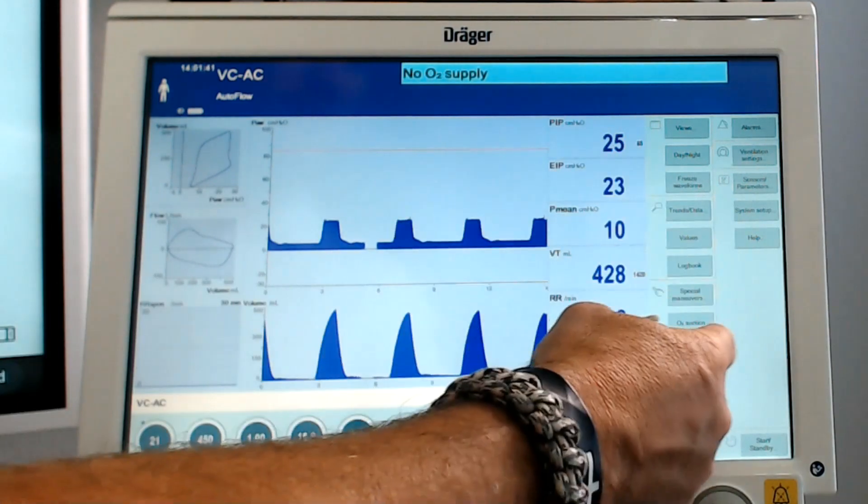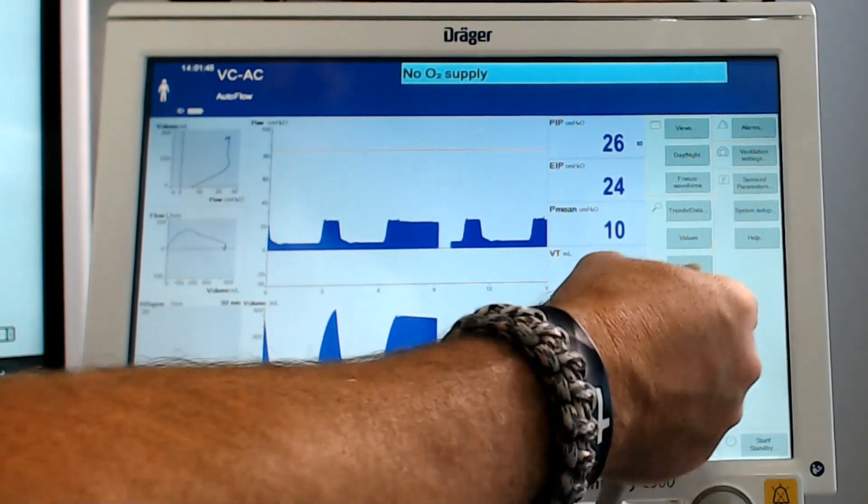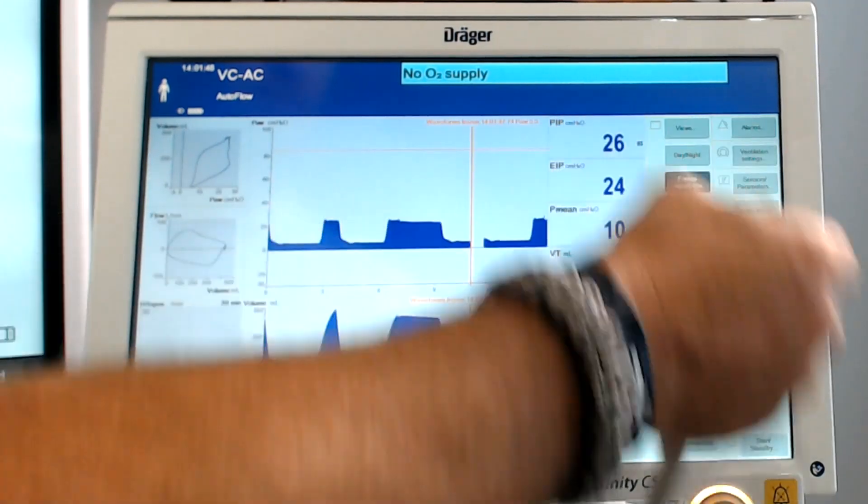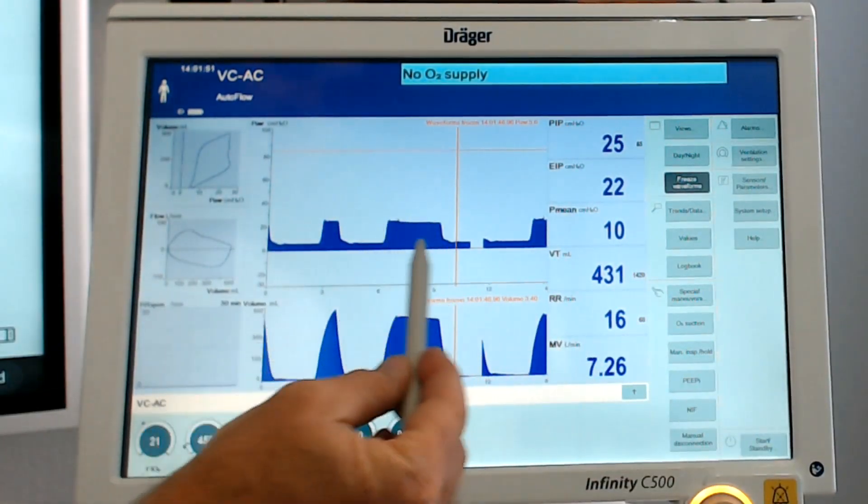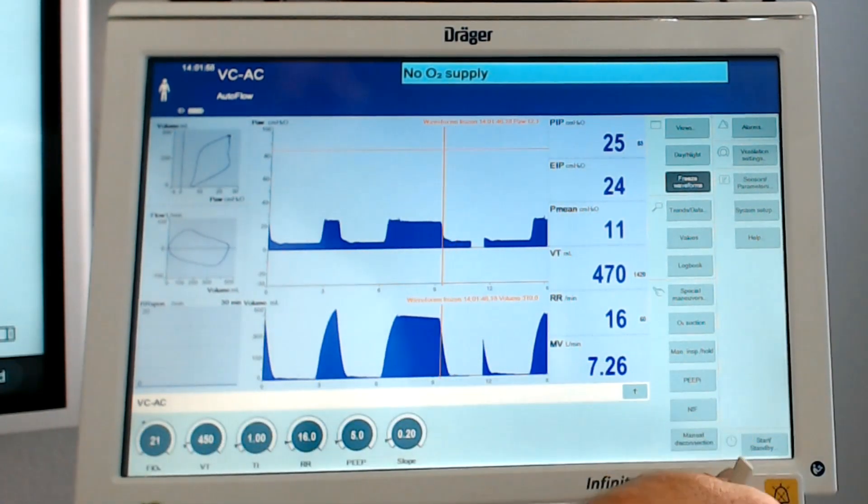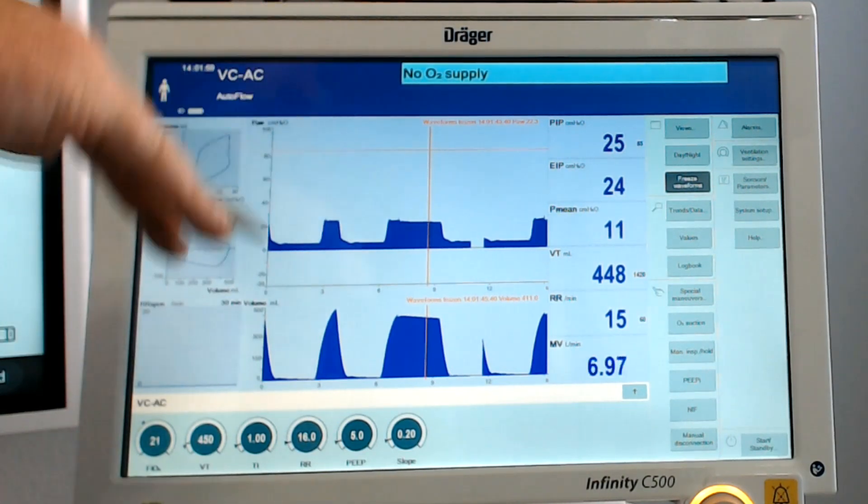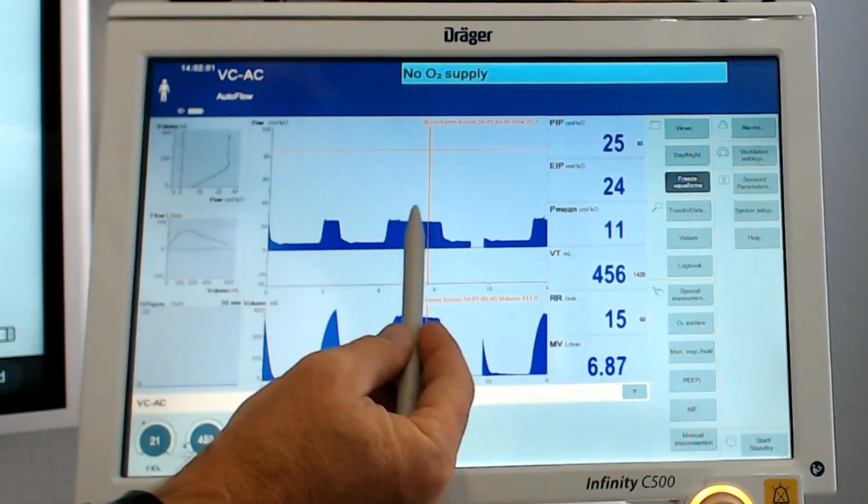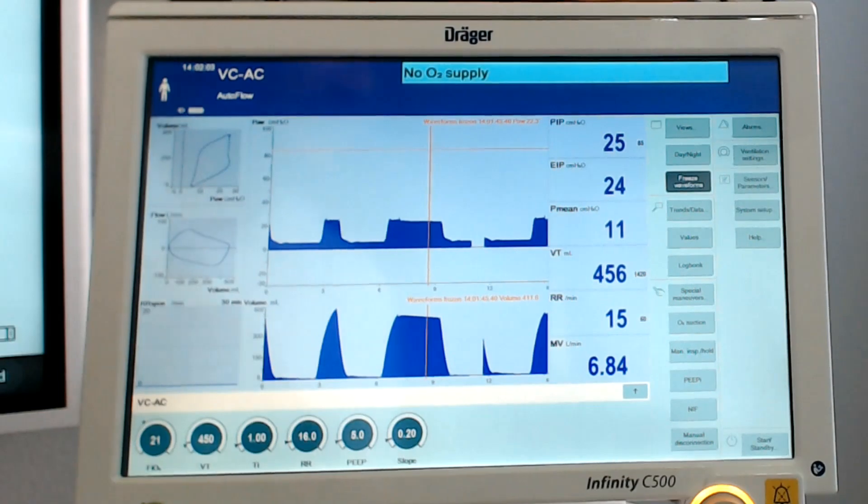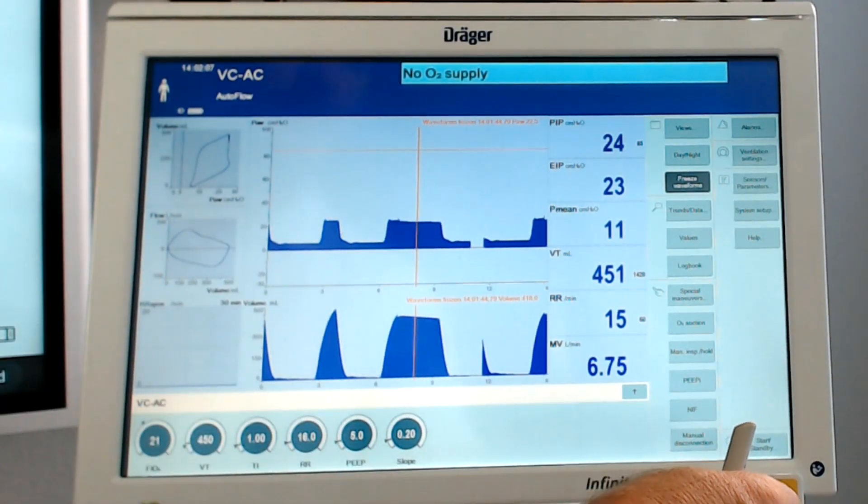Now what I'm going to do is an inspiratory hold. And look what happened. It looks very similar to what we saw in pressure control. We saw that there was not a big drop from peak inspiratory pressure down to plateau. Instead, plateau essentially stays with where your pressure is being delivered. And that's exactly right.